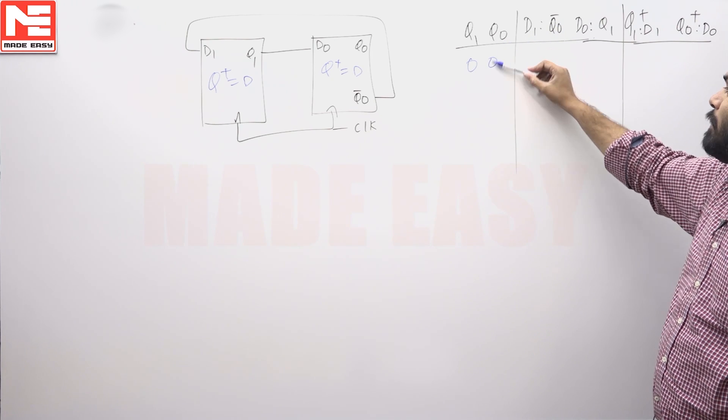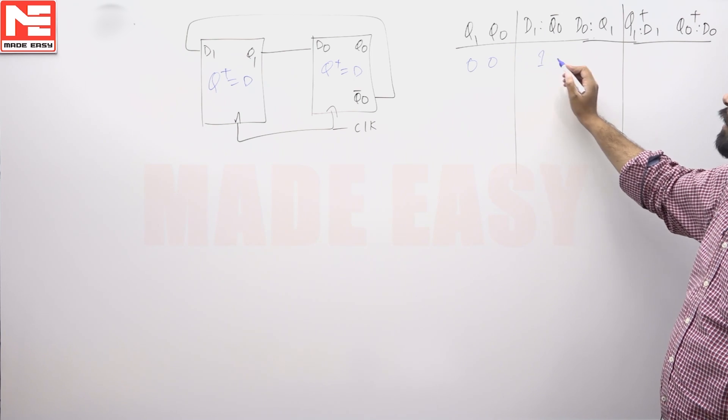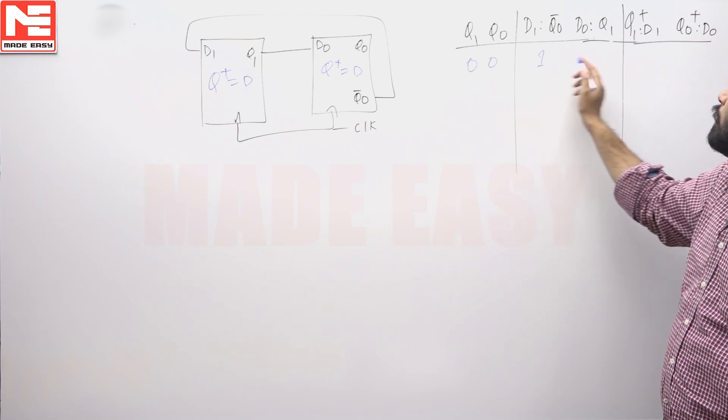D1 is equal to Q naught bar. Q naught bar means Q naught is 0 here, so this will become 1. D naught is Q1, Q1 means basically 0, so we are going to get 0.